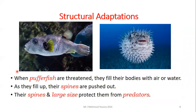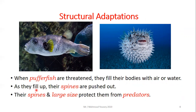Other structural adaptations include the puffer fish. Both pictures show only one fish - the left is its normal state, and the right is the same fish when it is threatened. When puffer fish are threatened, they fill their bodies with air or water. As they fill up, their spines are pushed out. Their spines and the larger size protect them from predators.